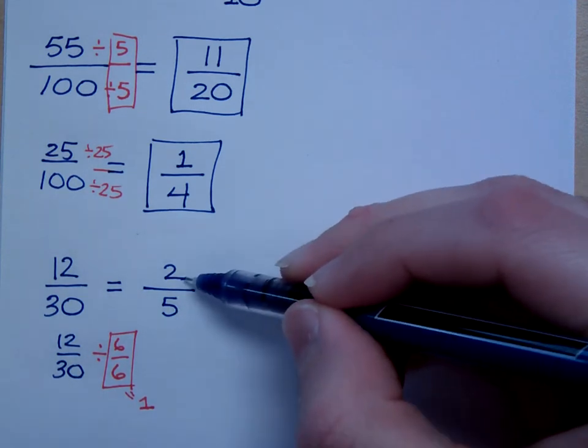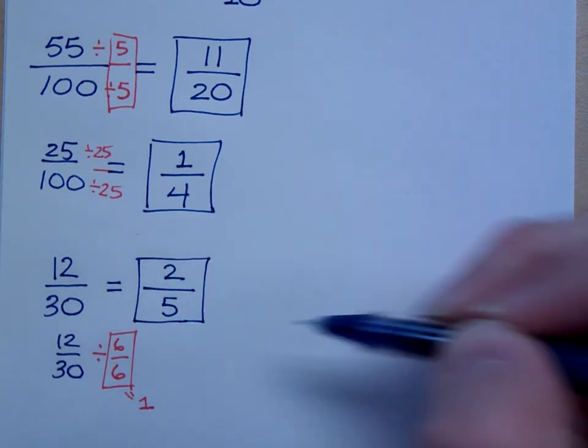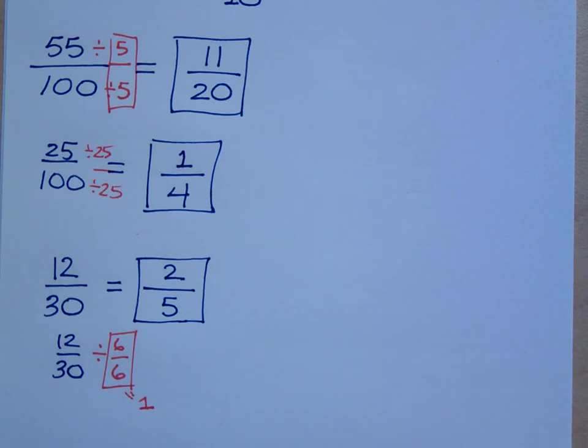Excuse me. Is there a number that could go into both 2 and 5 other than 1? No. So, what you've done here is that you've reduced this fraction. You've reduced 12 over 30 into its simplest terms, which is 2 fifths.